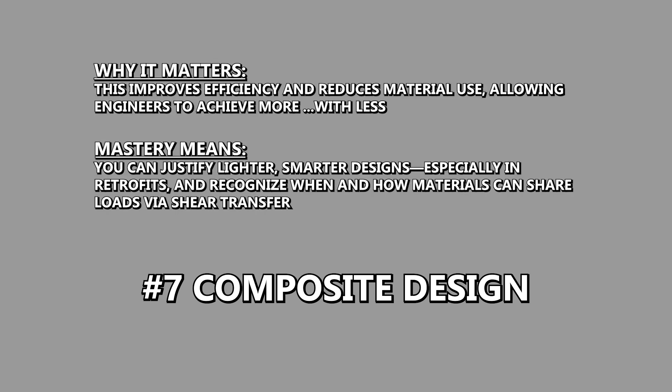Number seven: composite action — let's start thinking with multiple materials. Efficient designs often come from getting multiple materials to work well together. We have our four top building materials — wood, masonry, concrete, and steel — and they all have their pluses and negatives. Composite action is about combining the positives and leaving some negatives aside. For example, using the compressive strength of concrete while relying on the tensile capacity of steel, or using the lightweight properties of wood and achieving longer spans by reinforcing with structural steel. Understanding shear transfer and interaction will help you optimize your designs.